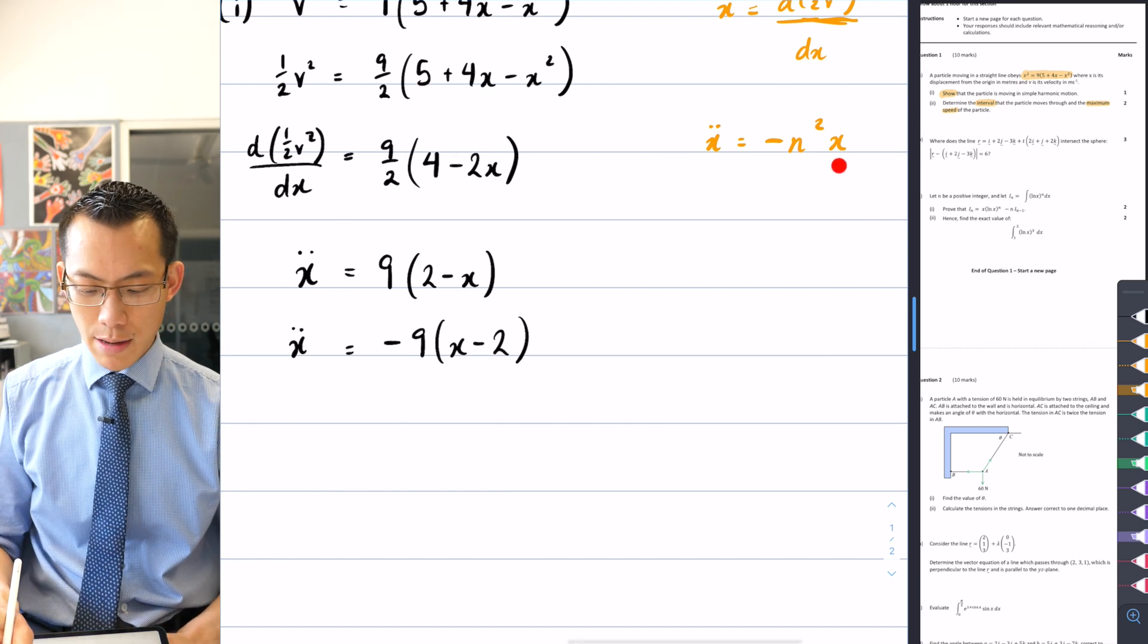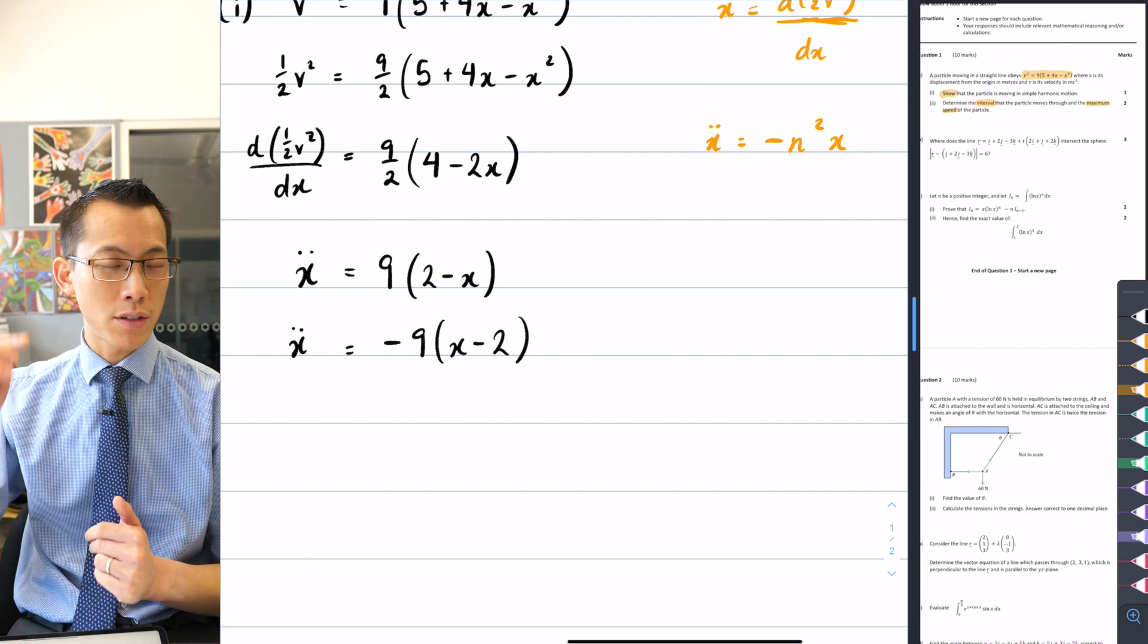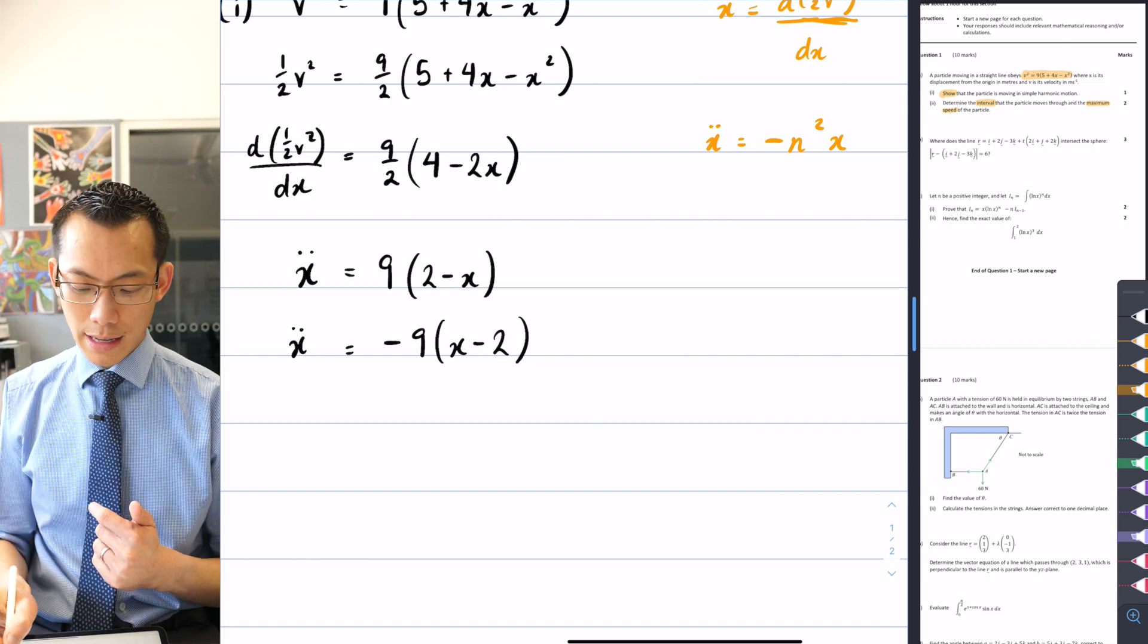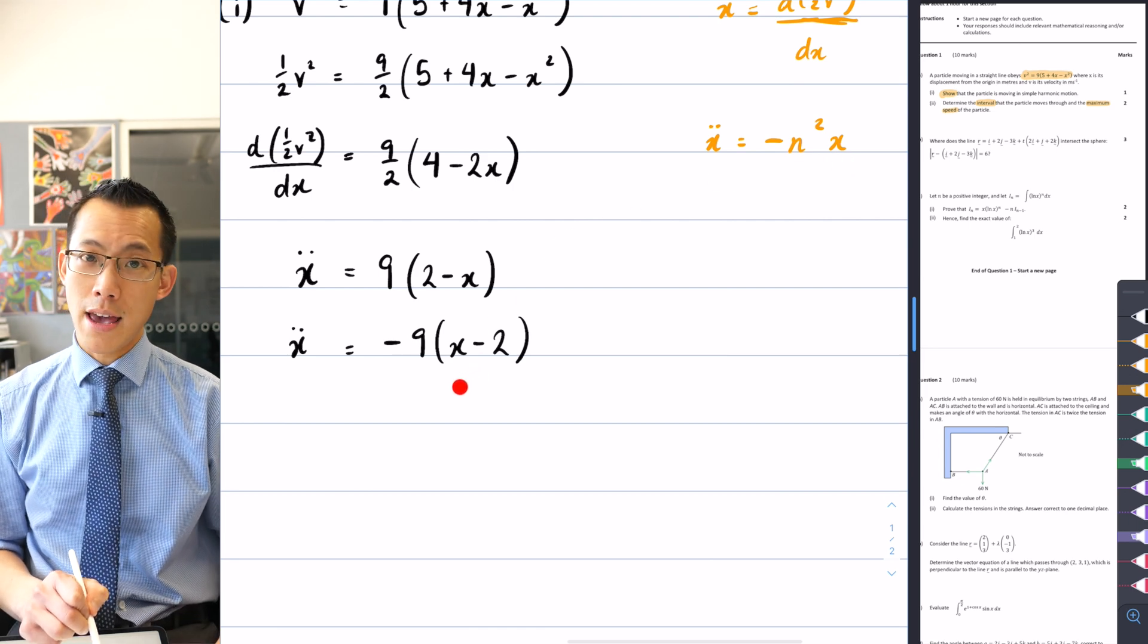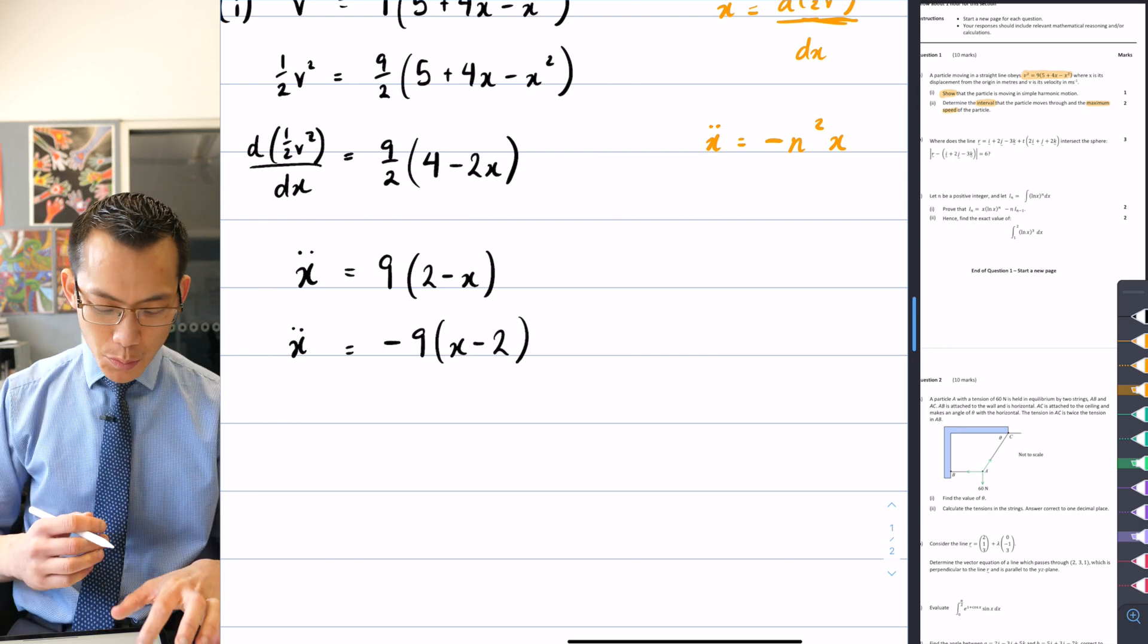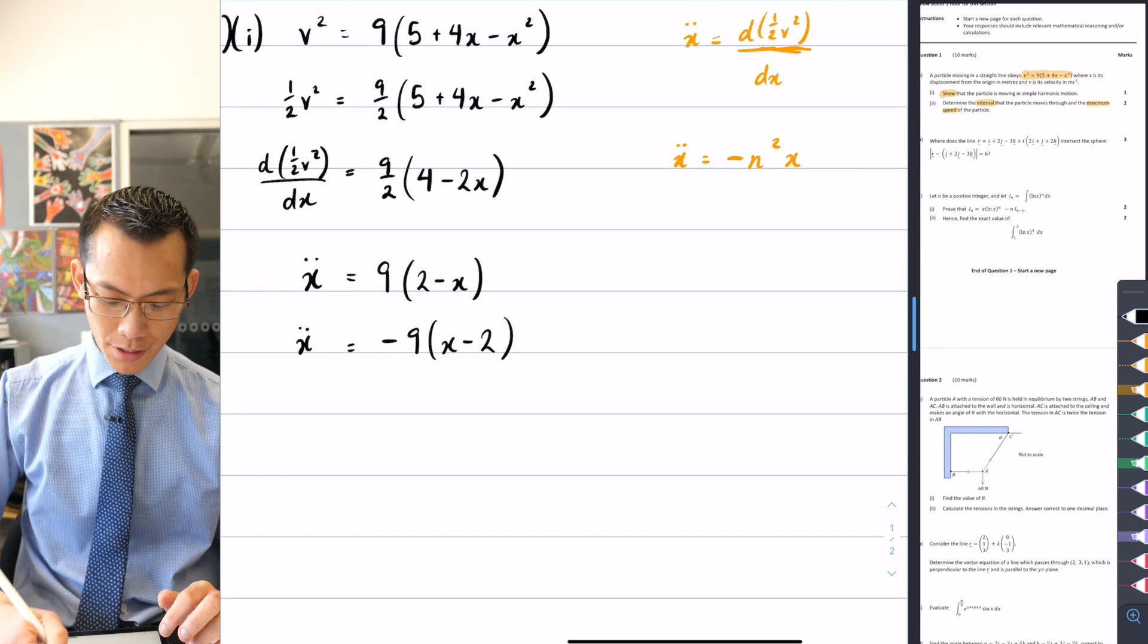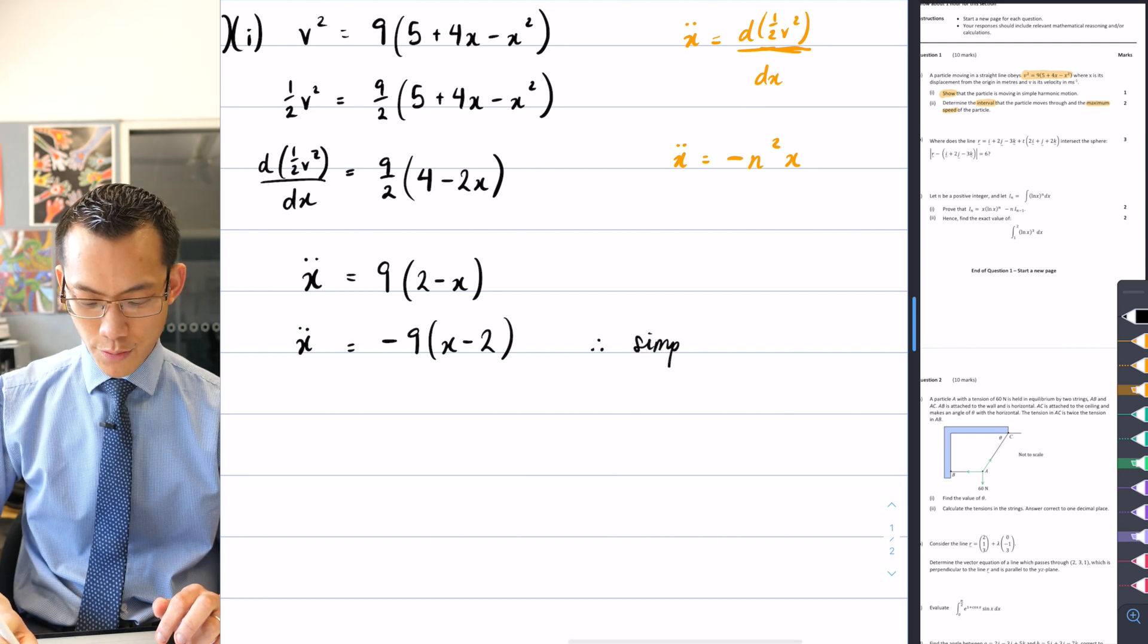You can see it's not exactly the same as this, but that's because it's off by a constant, which means there's been a shift. The center of motion, unlike in this situation, which would be x = 0, the center of motion here is going to be x = 2. And that's all there is to it. Okay. So I can say off of this, therefore, this is simple harmonic motion. I don't need to prove any more.